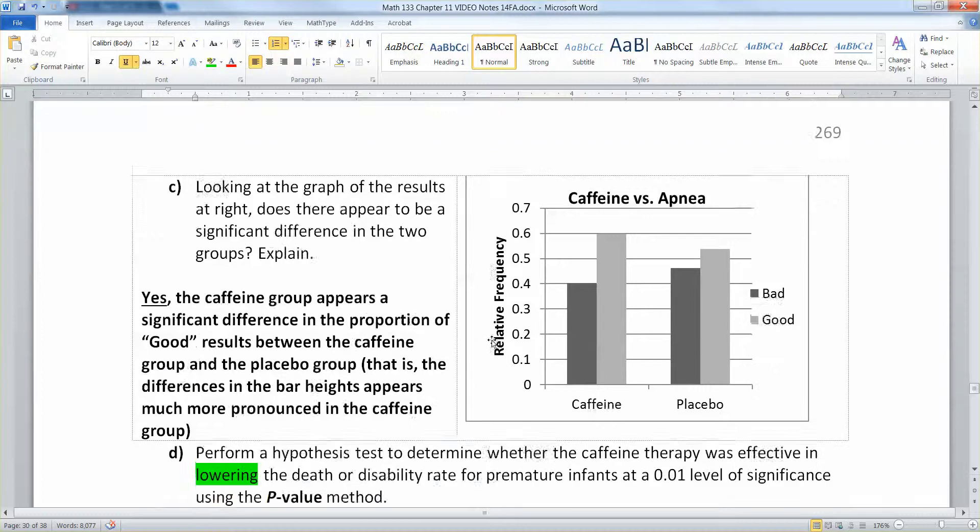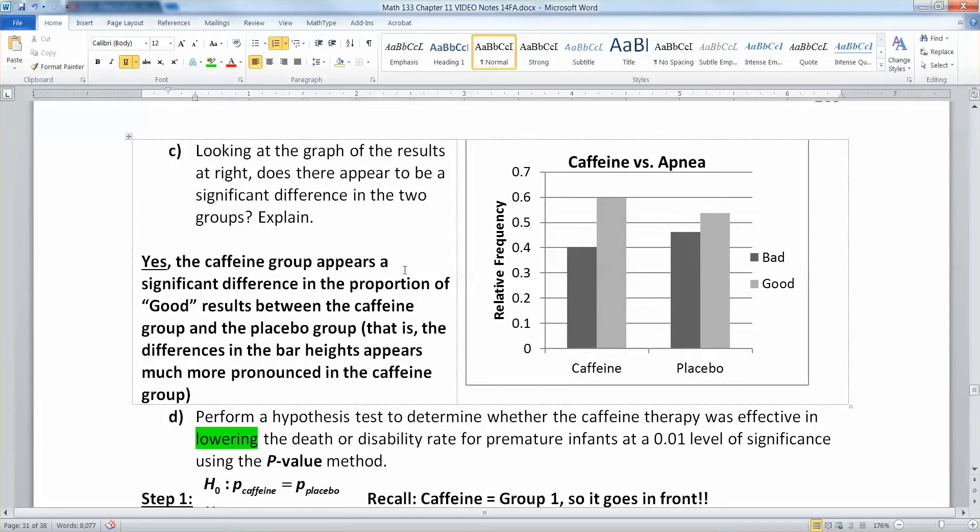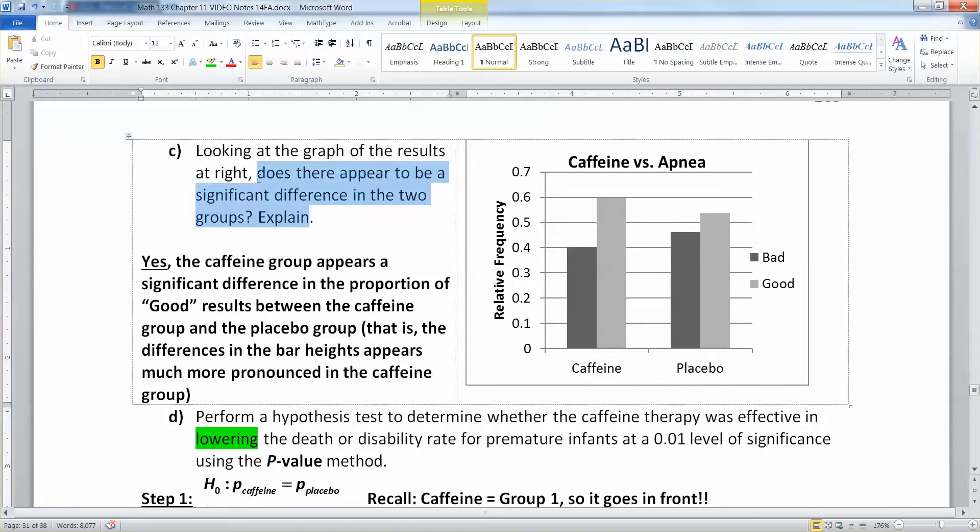All right now let's look at the graph here. So we have the graph at right shows the proportions, the relative frequency for bad outcomes and good outcomes for both the caffeine group and the placebo group. So you can see the bad outcomes here, caffeine group, good outcomes over here and vice versa.